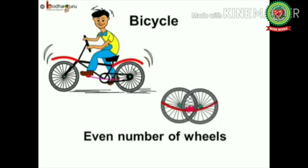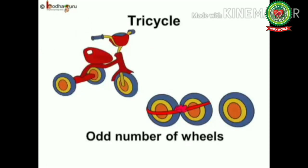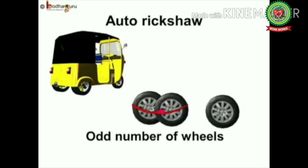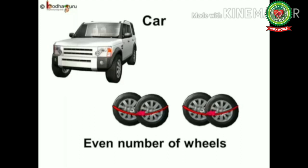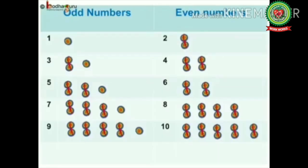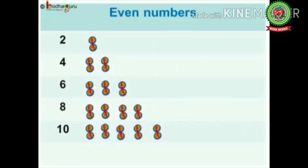Let us see all the vehicles. A bicycle has two wheels — that means an even number of wheels. A tricycle has three wheels — that means an odd number of wheels. Similarly, an auto rickshaw has an odd number of wheels because it has three wheels, making only one pair with one left behind. A car has four wheels — that means two pairs, an even number of wheels.